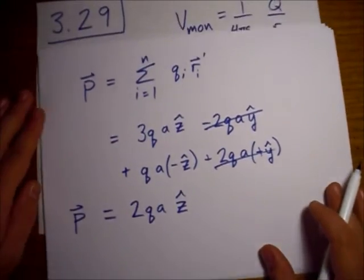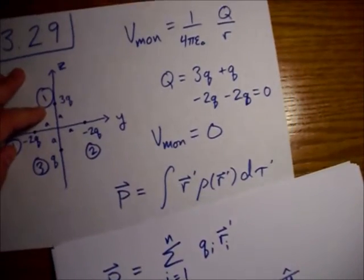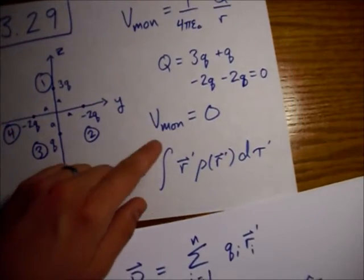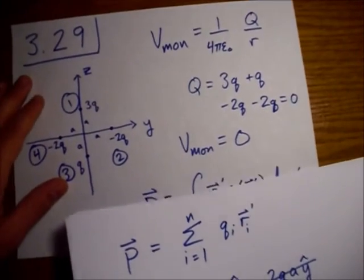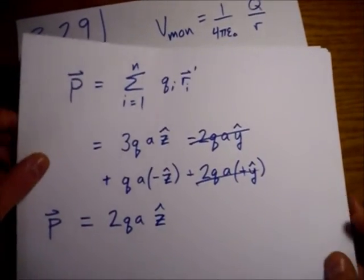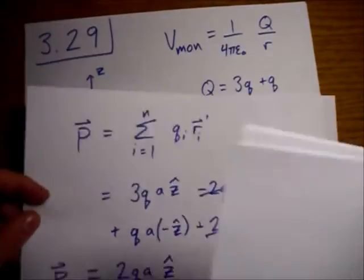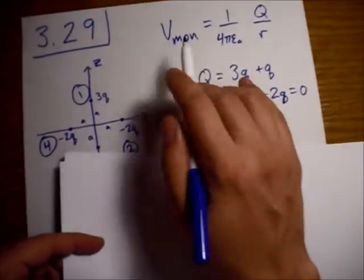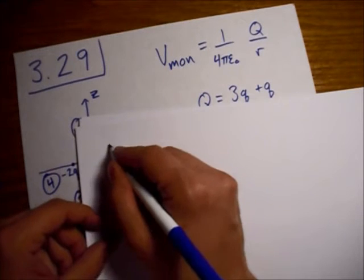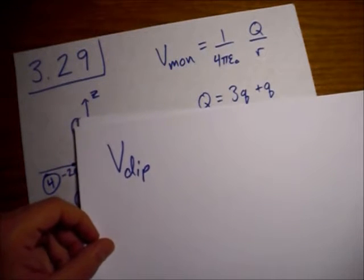Again, what we're looking for at the end is basically the dipole term in our multipole expansion. That will be the dominant term, right? Let's write out that formula. So, here we had the monopole term. Now, let's write out the dipole term. This is found in equation 3.99.